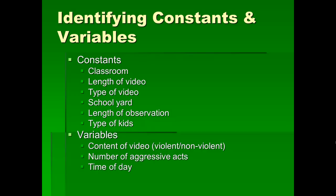However, there are certain things that vary in this experiment. One is the content of the video — violent versus nonviolent. Another thing that varies is the number of aggressive acts each student will commit — a student could commit none, or they could commit 30, or if they're really active, 60. Also, another thing that varies is the time of day — some students are tested in the morning, some in the afternoon.